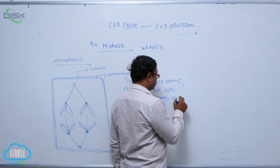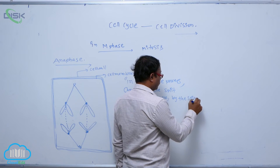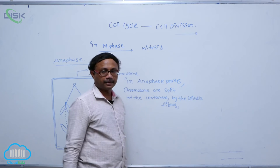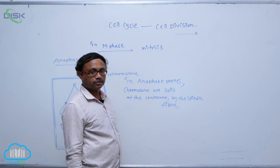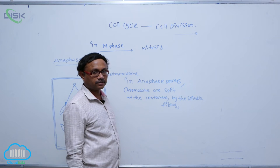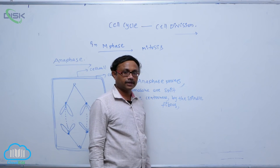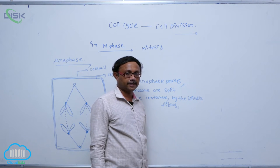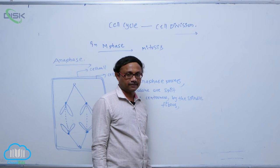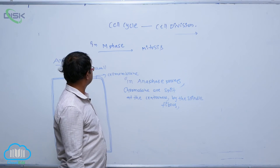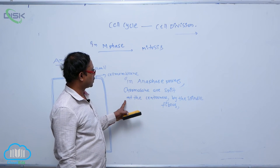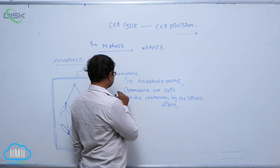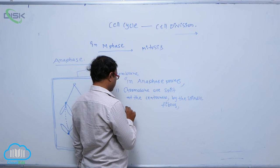In metaphase, spindle fibers are attached to each chromosome to form the spindle apparatus, known as the bipolar spindle apparatus. After that, in anaphase, chromosomes are split at the centromere by the spindle fibers.